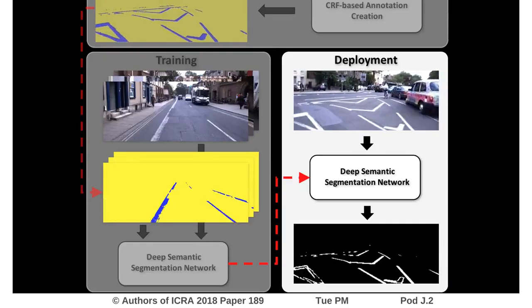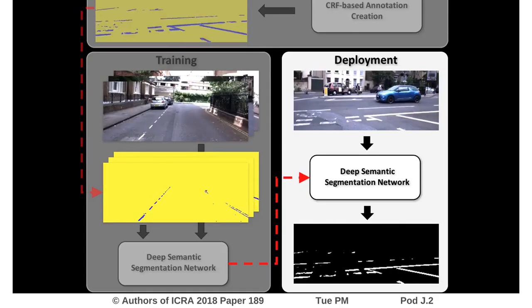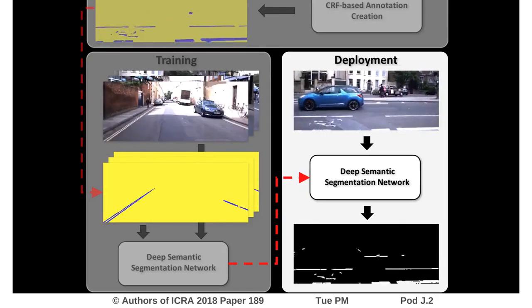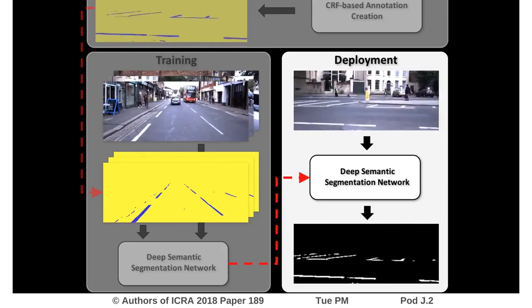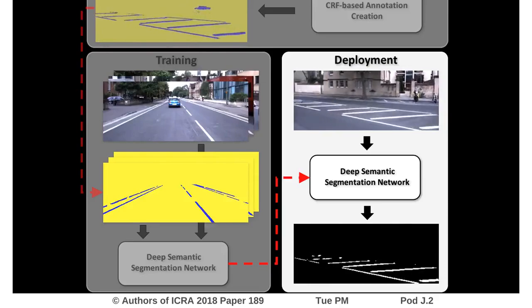At runtime, the trained network detects the road markings in the scene in real-time using only a monocular camera.